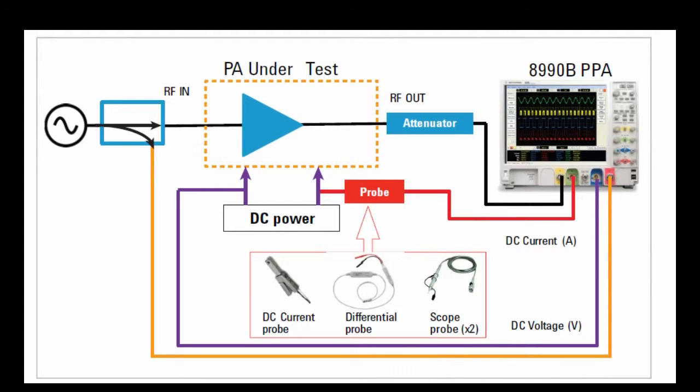This diagram shows the setup of a PAE test on a GSM power amplifier integrated circuit. The RF in connects to the power amplifier while the RF out ports on the power amplifier connect to the channel 1 and 4 of the 8990B respectively.